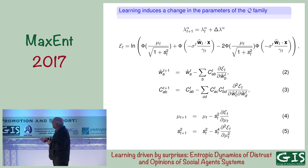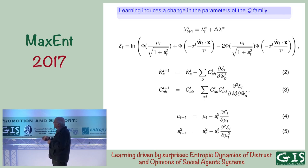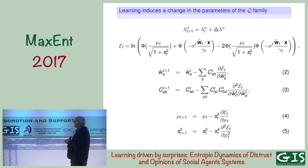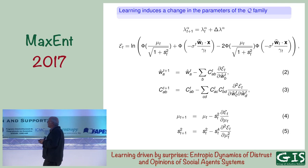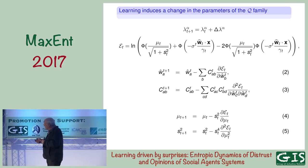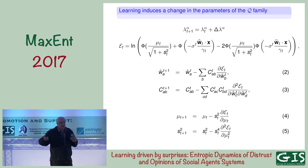One agent learning from the other: I change the expected values — these are the synaptic weights of the perceptron — and this is the covariance, which acts like a schedule mechanism to modulate the size of the changes. This quantity E is minus the log of the evidence. So at the end, the optimal learning algorithm is a gradient along the evidence, in order to increase the evidence.